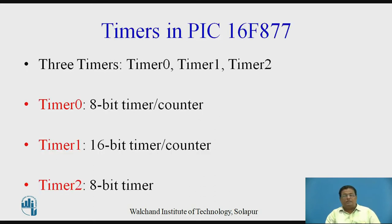In the PIC16F877 controller, there are three timers: Timer 0, Timer 1, and Timer 2. Timer 0 is an 8-bit timer and counter. Timer 1 is a 16-bit timer and counter. Timer 2 can be used only as an 8-bit timer.